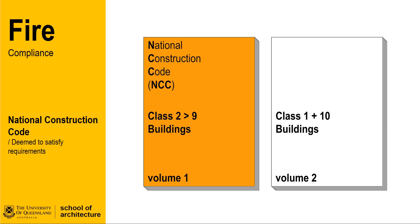Compliance with these standards is necessary to achieve an occupation certificate that is usually managed and issued by the building certifier. The building code is structured in a way that spells out the aims and objectives of each performance requirement and then provides a deemed-to-satisfy solution to each of those objectives. This approach paves the way for alternative solutions to be devised that fall outside of the deemed-to-satisfy requirements. These alternate solutions are usually devised as a consequence of site conditions or context, and adopt an evidence-based approach using the knowledge and experience of licensed fire engineers.